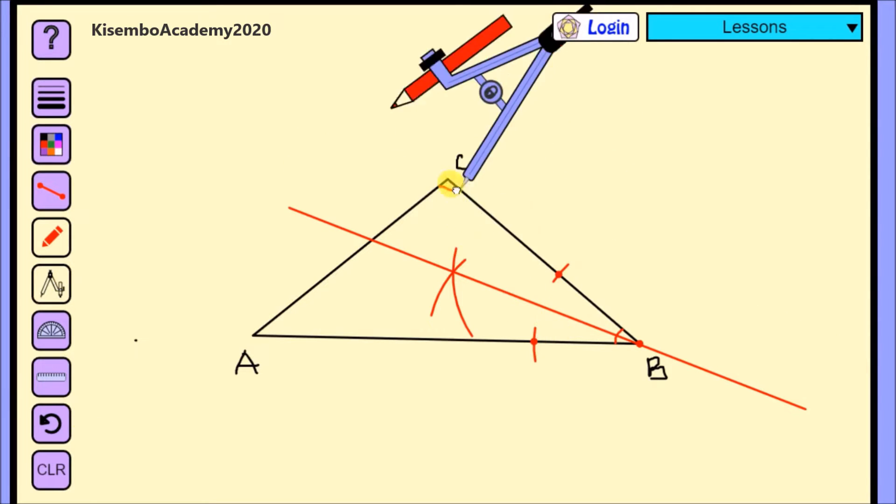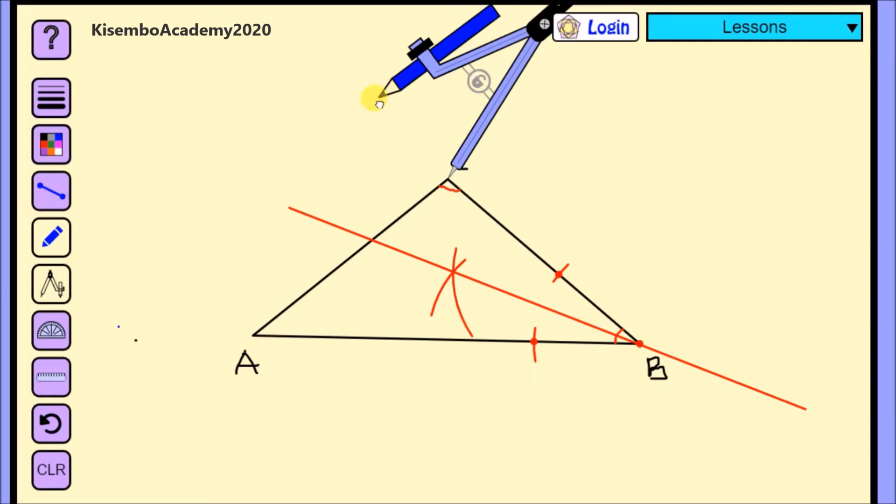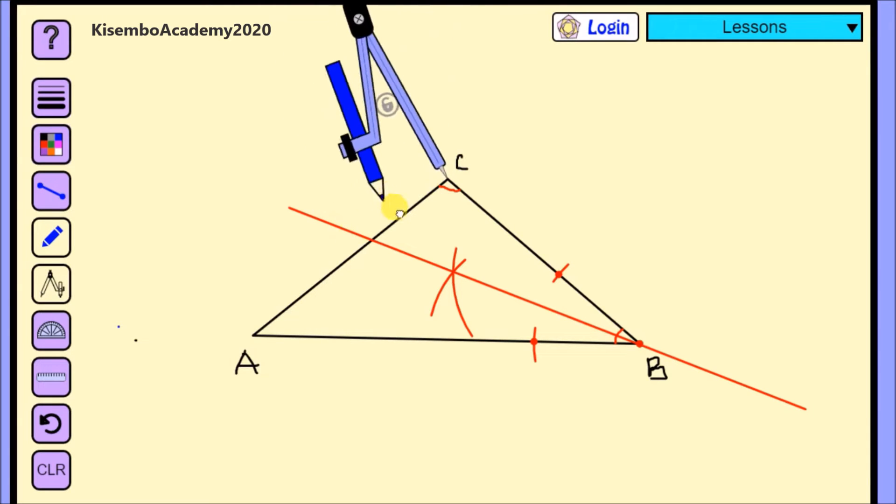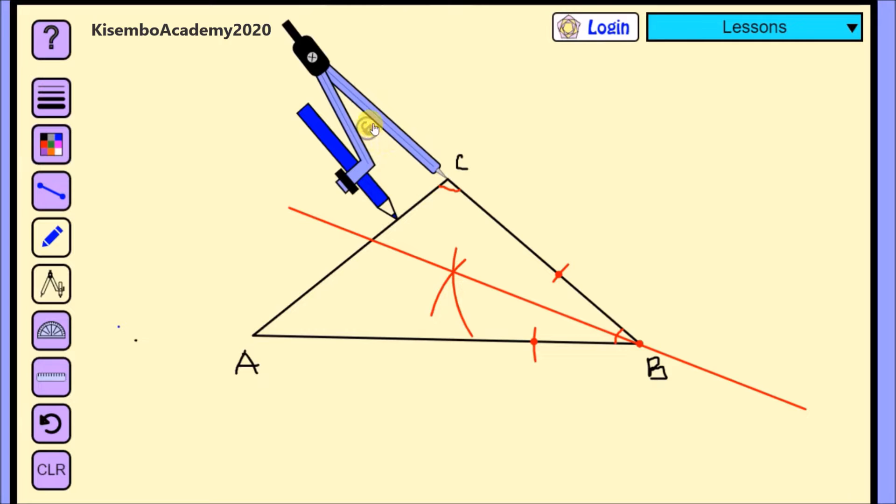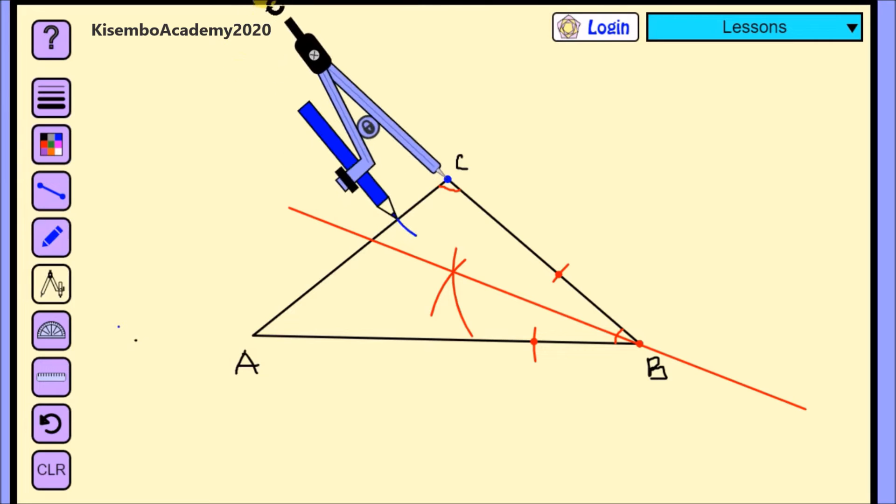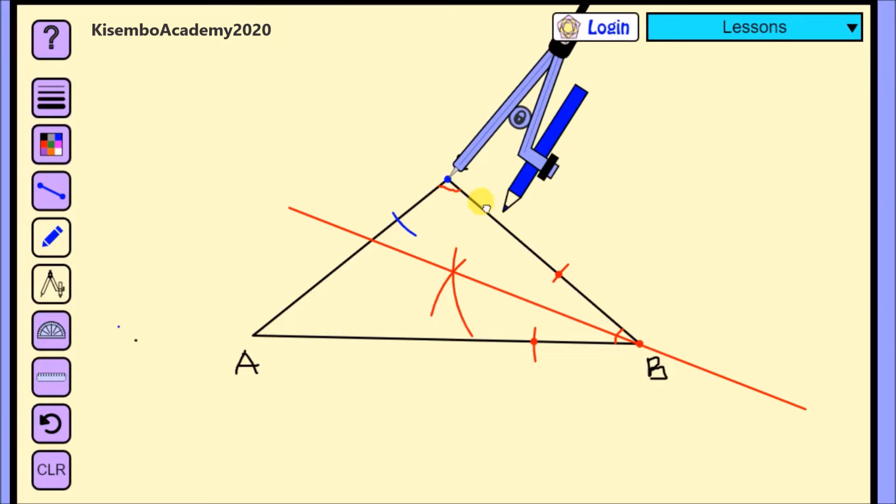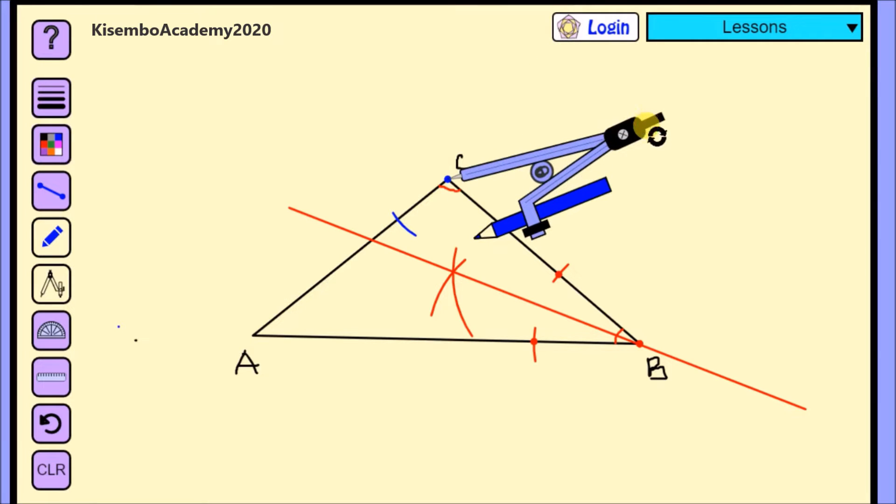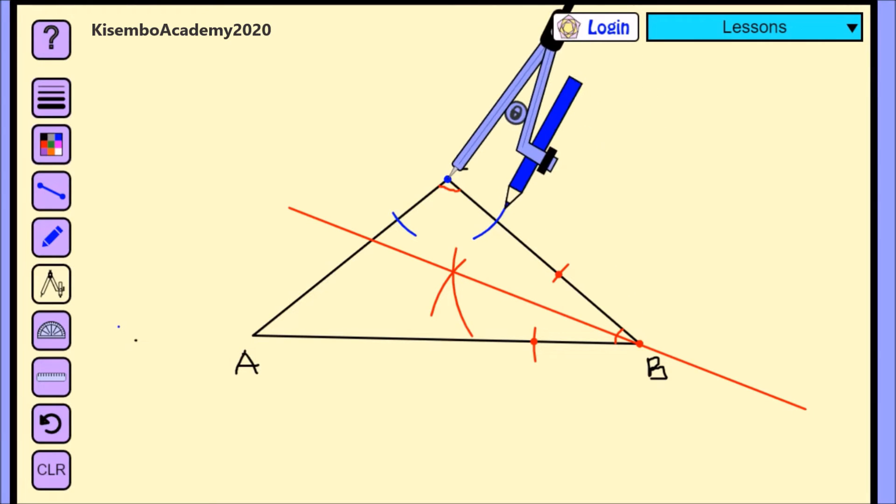So after drawing the line again, I'm going to do the same to another angle. Here, I have just bisected angle ABC. So I'm going to do the same procedures on angle BCA. I'm going to get my compass needle, put it at point C.